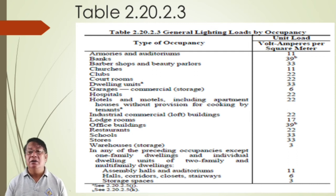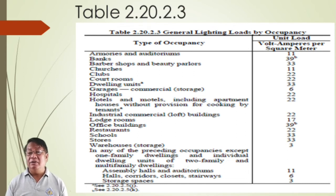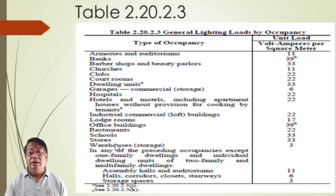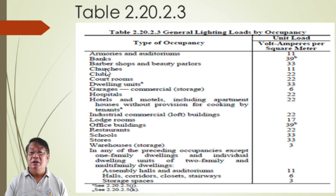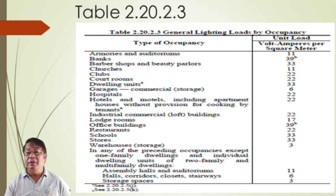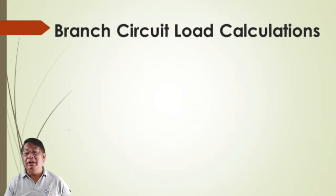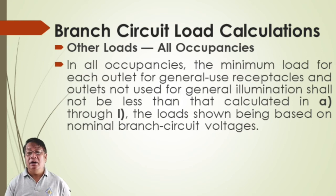We have specified areas of occupancy listed. For churches, we need 11 volt-amperes apparent power per square meter, and so on. For all other loads in any other occupancies, we have the minimum load for each outlet for general use receptacles.